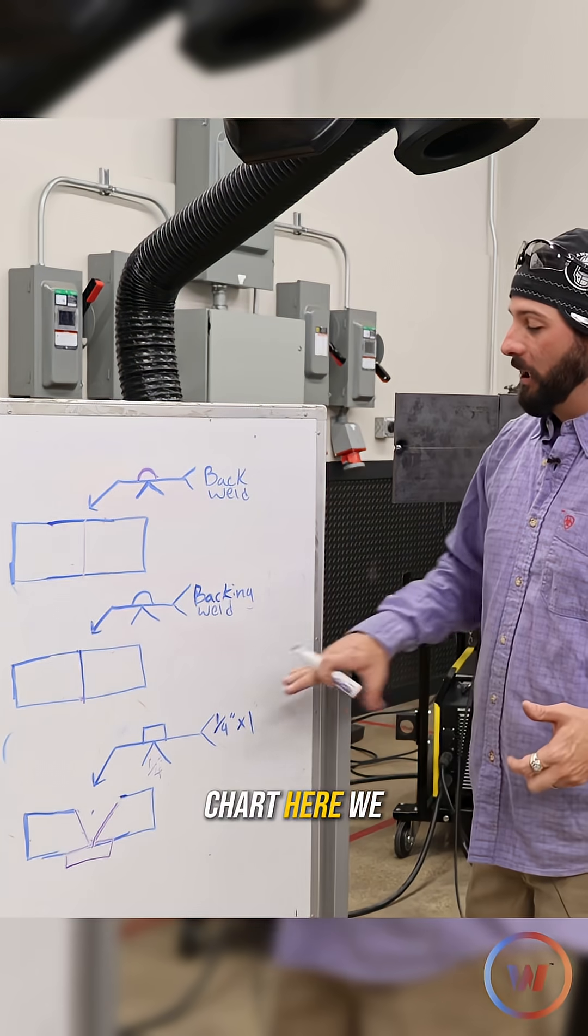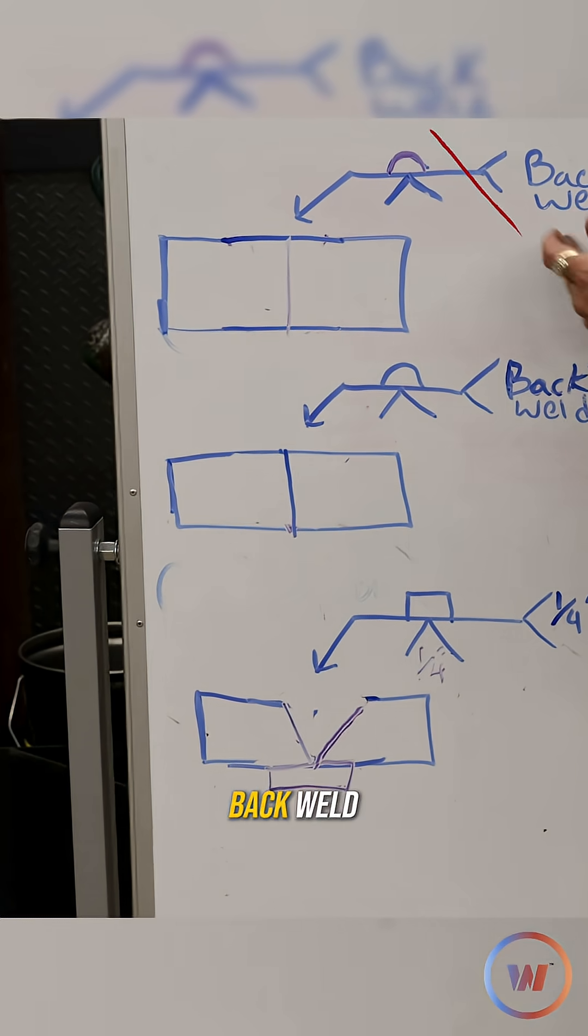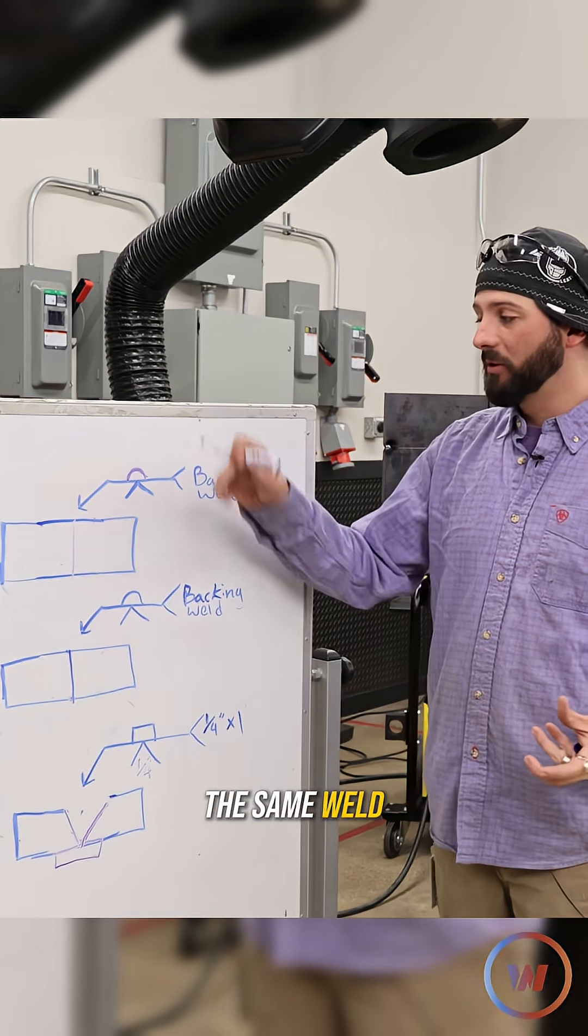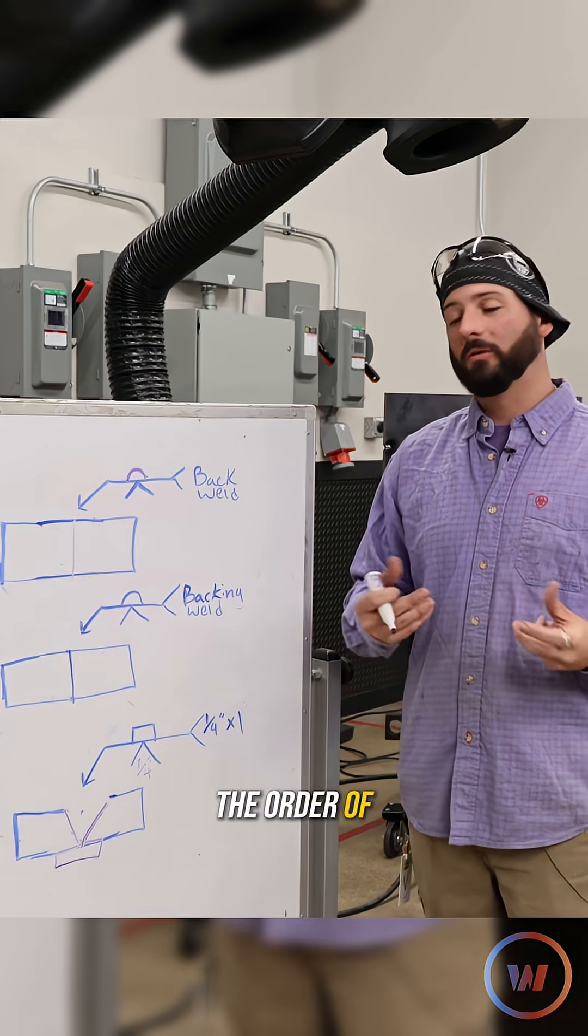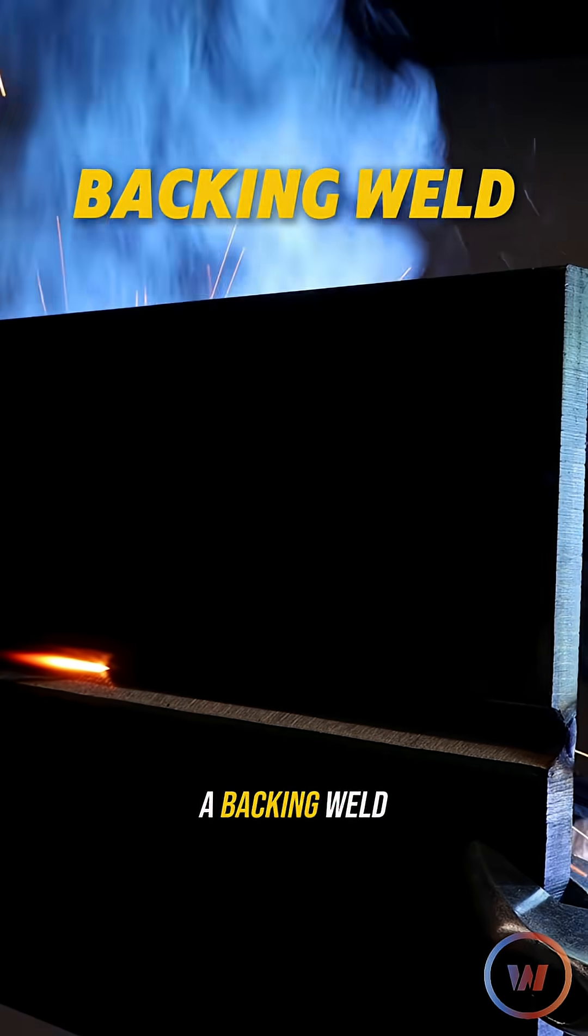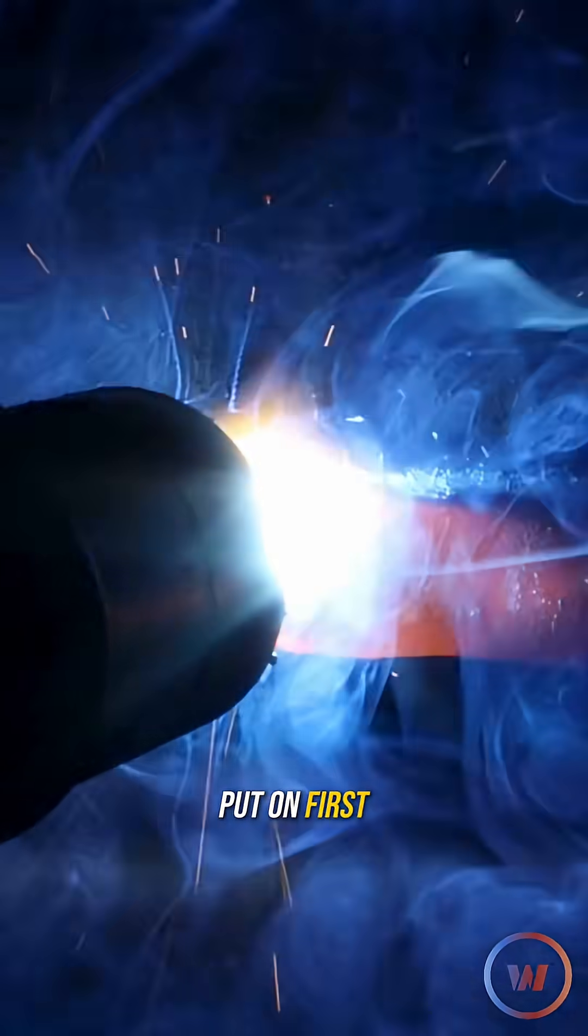Moving up the chart here we get into a backing weld. Not to get confused with a back weld. They're pretty much the same weld symbol but it really comes down to the order of operations in which they're done. A backing weld is usually like a backing strap. It's going to be put on first.